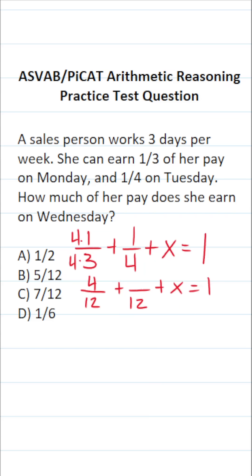To write four as 12, we would have to multiply it by three. We're also going to do that to its numerator. Four times three is 12. One times three is three. So one-fourth is the same thing as three-twelfths. Now that these have a common denominator, we can add them. This becomes 12. Four plus three is seven. So this is seven-twelfths plus X equals one.